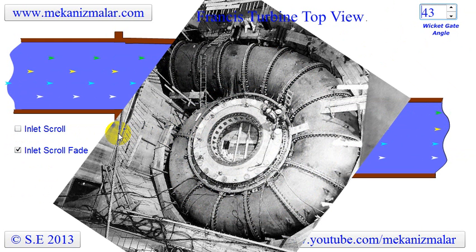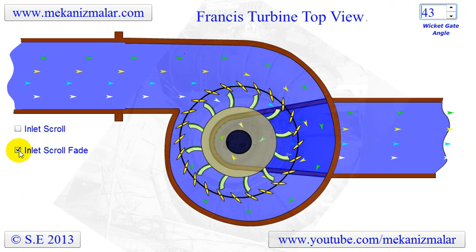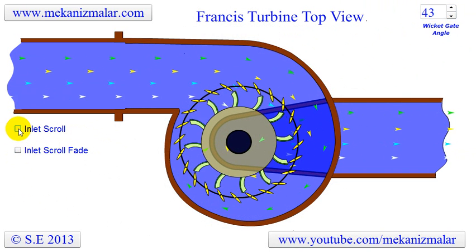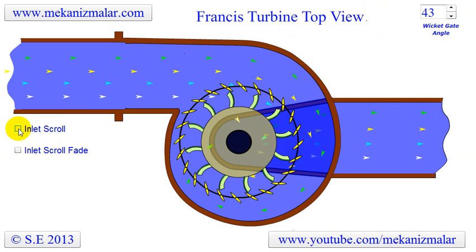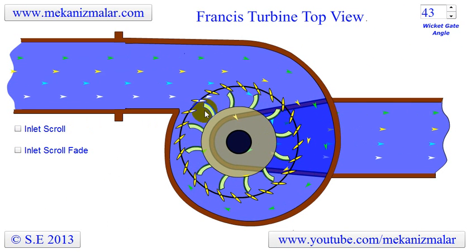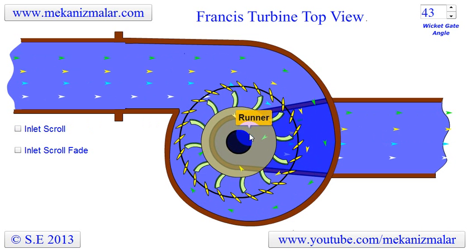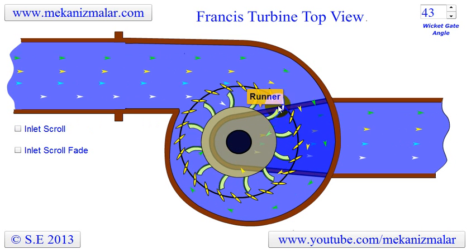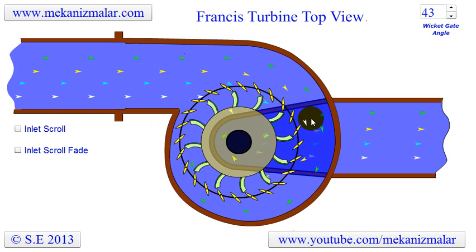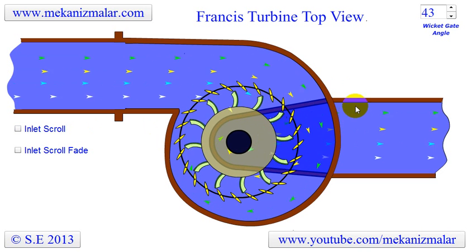The penstock diameter of a Francis turbine could be as large as 10 meters, which is 33 feet. The rotation speed of the runner can be in the range of 80 to 1000 RPM. The turbine shaft of the Francis turbine is almost always mounted vertically. This makes discharge of the water much easier due to the swirling of the water in the inlet scroll and the effect of gravity.